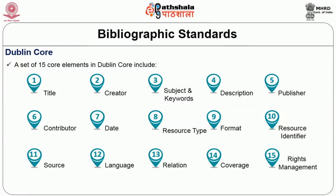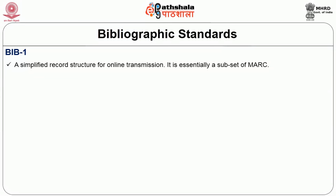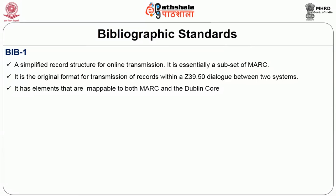BIBI1 is also a standard — a simplified record format, a subset of MARC. It is the original format for transmission of records within Z39.50, the dialog between two systems for retrieval of data. Its elements are mappable to both MARC and Dublin Core. Another standard is TEI — Text Encoding Initiative — which provides schemes for encoding text, including grammatical and linguistic features as well as content indicators such as identifying actors in a play, requiring text to be marked up using SGML encoding.